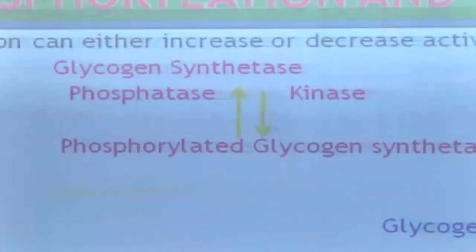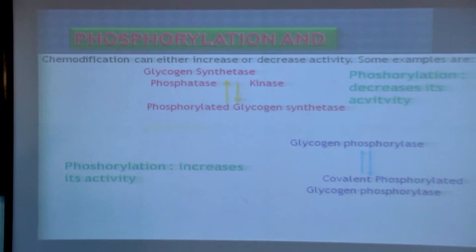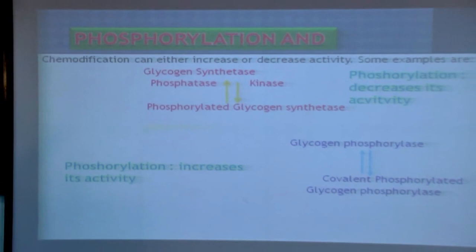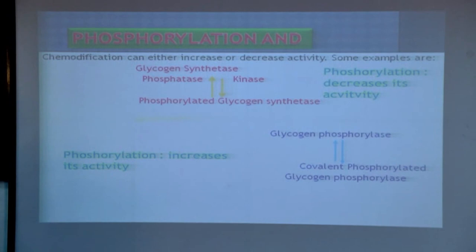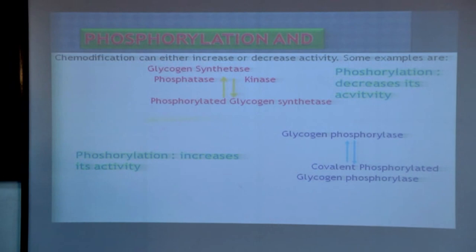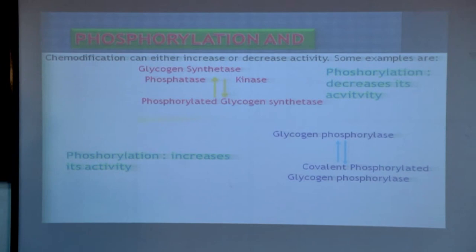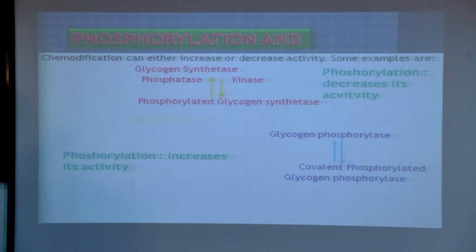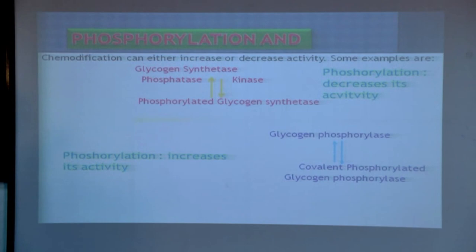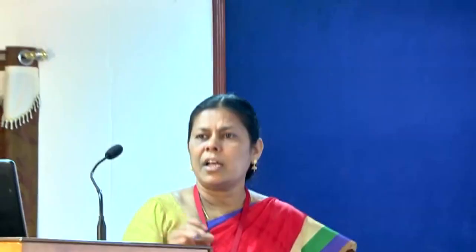For example, glycogen synthetase is phosphorylated by kinase, and this phosphorylation converts the active form to the inactive form. At the same time, glycogen phosphorylase when phosphorylated is converted to its active form. So addition or removal of the phosphate group may lead to either the active or inactive form depending on the enzyme. This type of modification or regulation is known as covalent modification.